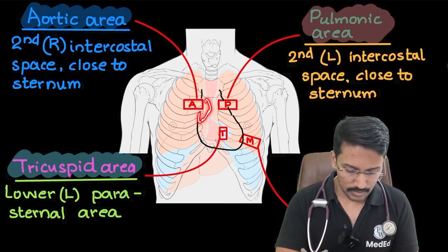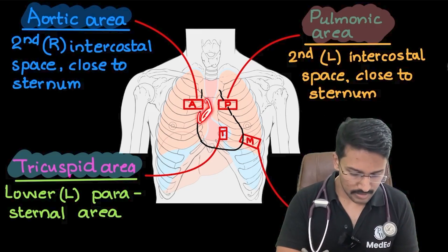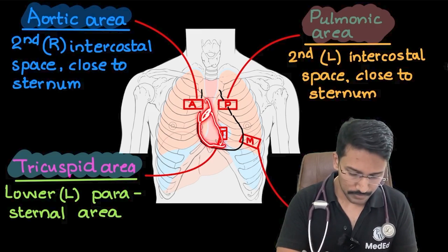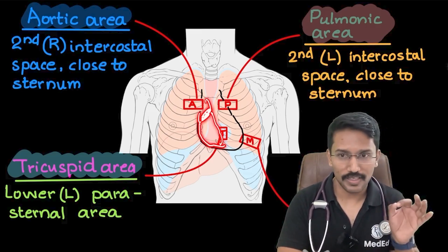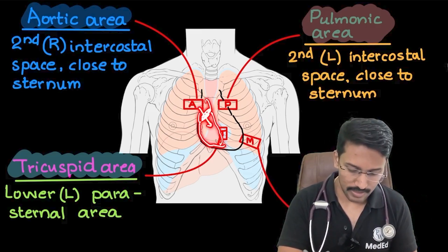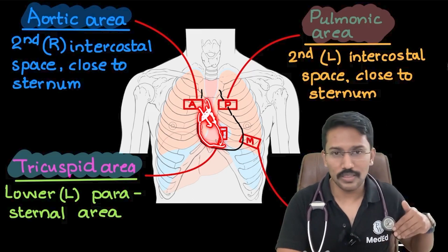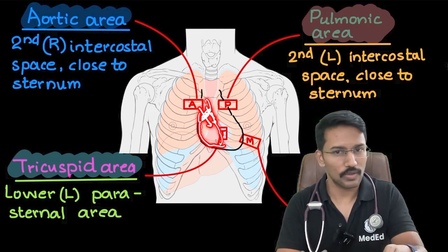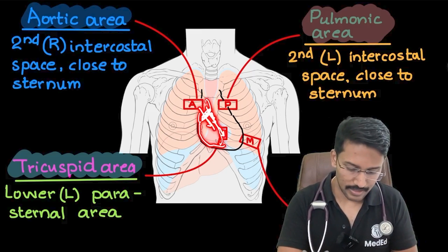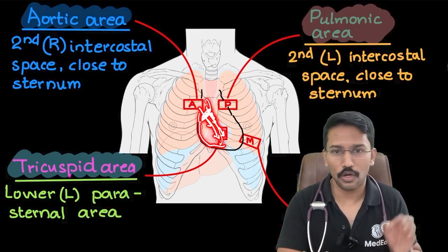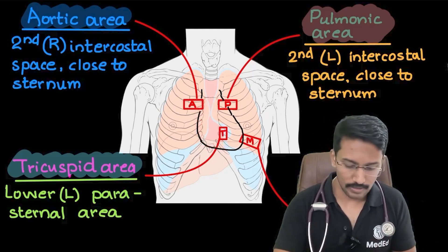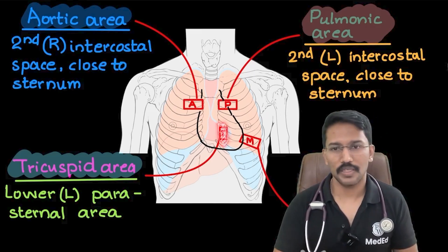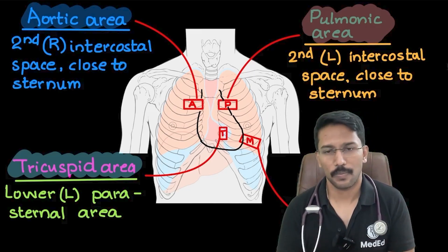This is where my right atrium is, this is the tricuspid valve, and this is my right ventricle. If the turbulence is created at the level of the tricuspid valve, the direction of flow of blood is towards the lower portion of the sternum, angled towards the left. Because of that, the left lower sternal border becomes my tricuspid area.